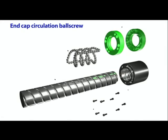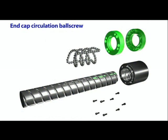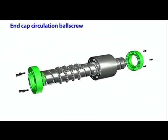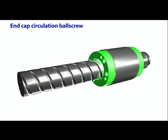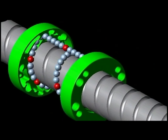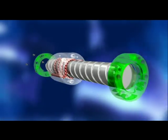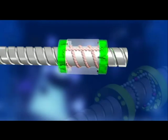End cap circulation ball screws are composed of a screw, nut, ball bearings, and end caps. The bearings remain between the screw and the nut, and the bearings return via a hole made through the end cap and the nut. Because this ball screw design causes the steel bearings to pass through the front and back sections of the nut, it is known as an end cap circulation ball screw.